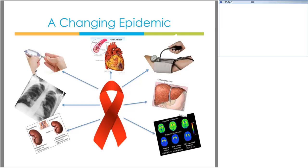In addition to those changes, the epidemic is also changing in a biological and medical way. We are currently seeing patients with multiple comorbid conditions as a result of aging and long-term HIV infection — including heart disease, diabetes, hypertension, cirrhosis and other liver disease, neurocognitive impairments, renal disease, and non-AIDS-associated malignancies.